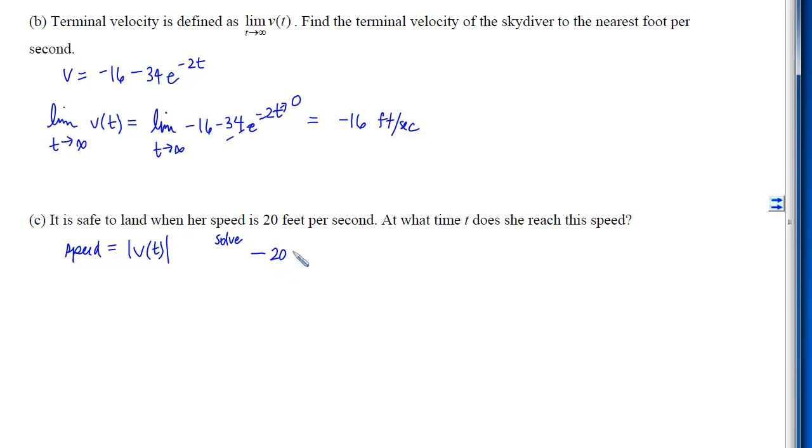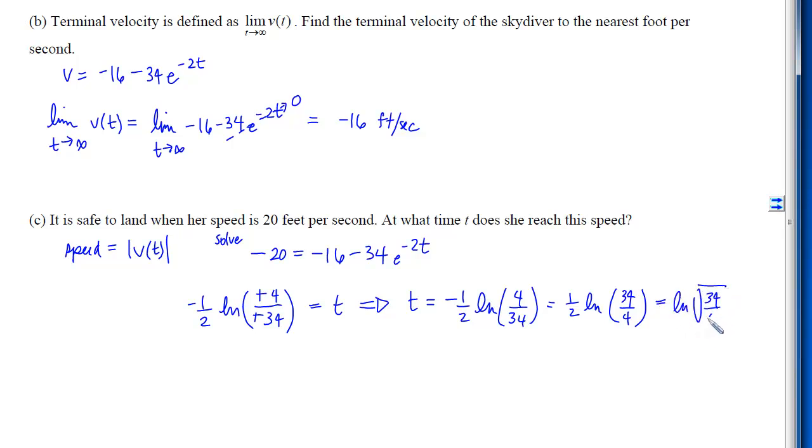We are solving for when that -20 equals the -16 - 34e^(-2t). This could be given to you as a non-calculator problem, which would require you to isolate t without your calculator. I can add 16 to both sides, divide by -34, take the log of both sides, and then divide by -2. I'd end up getting t = (1/2)ln(34/4), or it could be ln of the square root of 34/4, however you want to write it.